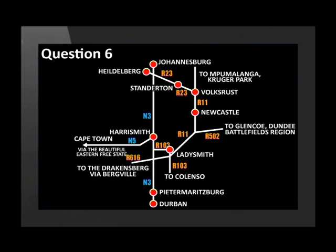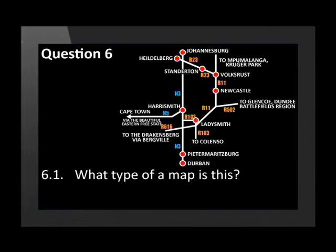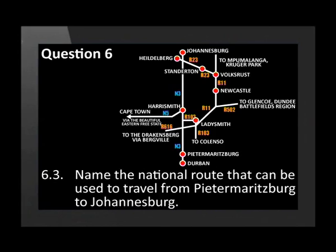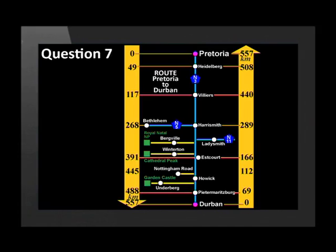Study the map from Johannesburg to Durban and answer these questions. What type of map is this? Which roads are used to travel from Durban to Dundee? Name the national route that can be used to travel from Pietermaritzburg to Johannesburg.